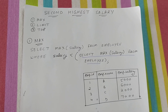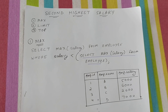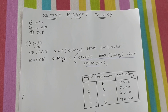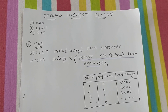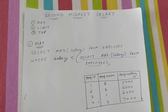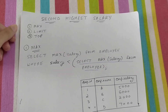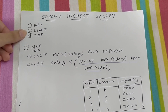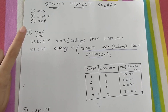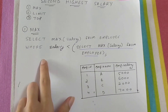Today we're going to discuss a very important interview question: how to find the second highest salary using SQL. There are three ways we can do this — one is MAX, second is LIMIT, and third is TOP. Let's go through them one by one.